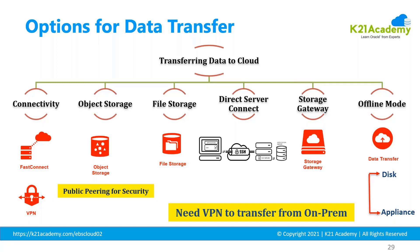Fast Connect provides bandwidth from 1 Gbps to 10 Gbps. You can also use Object Storage for migration. Object Storage is a public service on the cloud, but if you want to access it securely without going through the Internet, you need to use public peering so your data travels through a private channel.